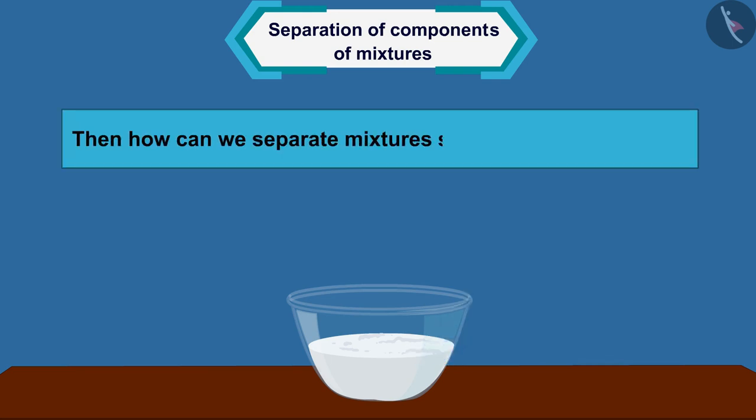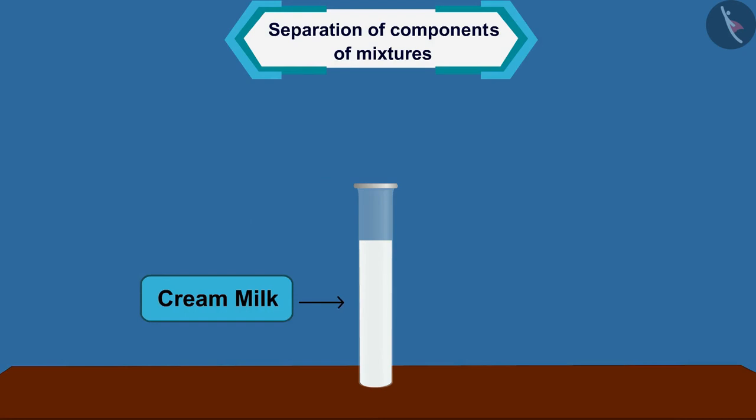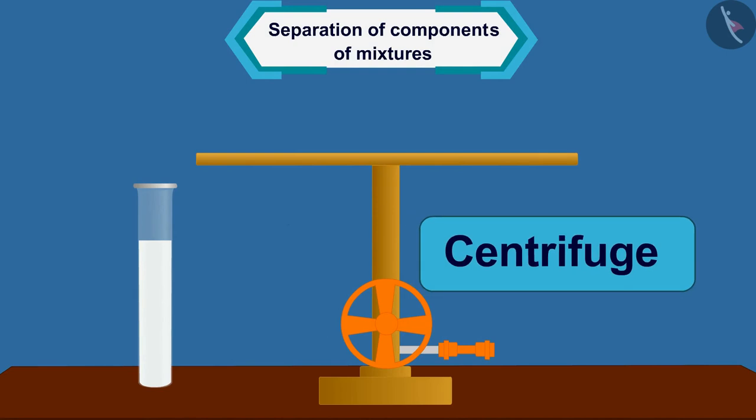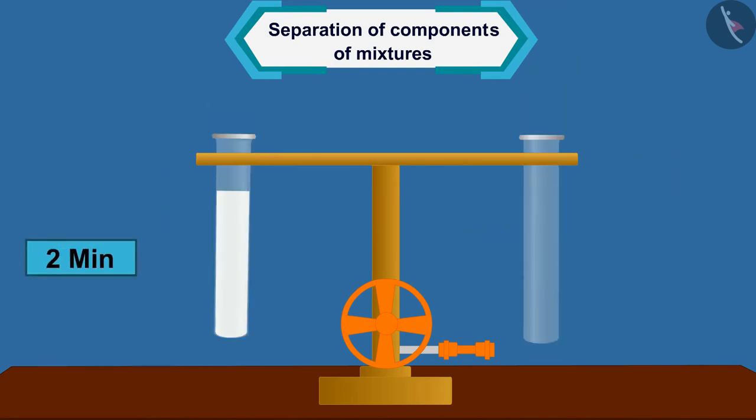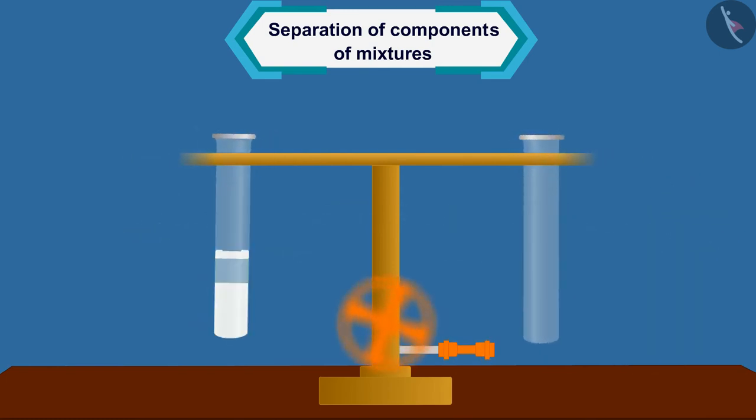Then, how can we separate mixtures such as milk with cream? Now, let us take this creamy milk in a test tube. Now, centrifuge it for two minutes with a centrifuge machine. What do you see? When the centrifugal device is rotated rapidly, heavy milk particles settle down and light cream particles remain on top.